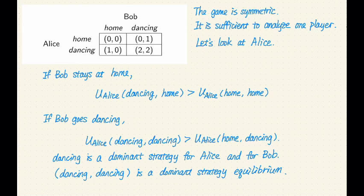So first of all, notice that this game is completely symmetric. Alice and Bob are completely symmetric. So we only need to consider one of the players and the analysis for the other player is completely the same. So let's focus on Alice.